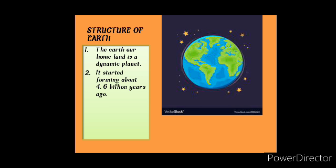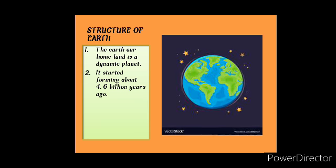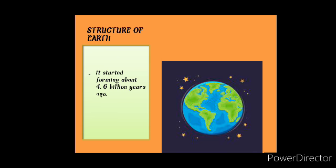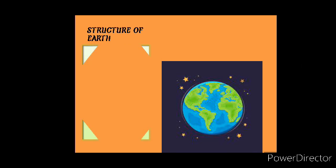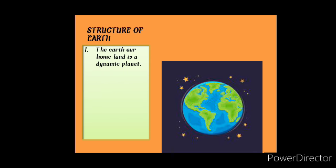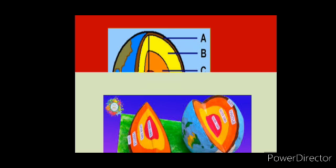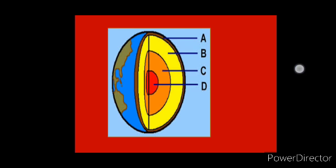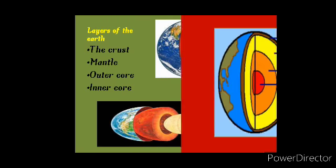The earth started forming about 4.6 billion years ago. Just like an onion, the earth is made up of several concentric layers with one layer inside another. Studying different types of rocks, scientists have discovered that the planet is made up of three layers of different types of rocks and metals. These layers are called crust, mantle, and core.